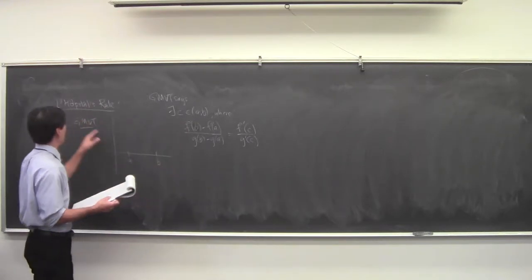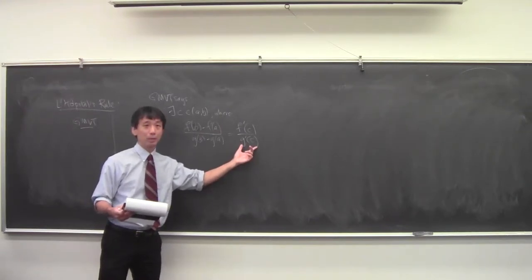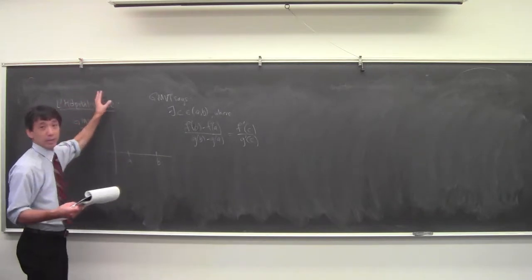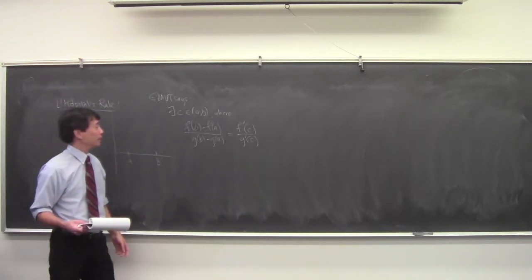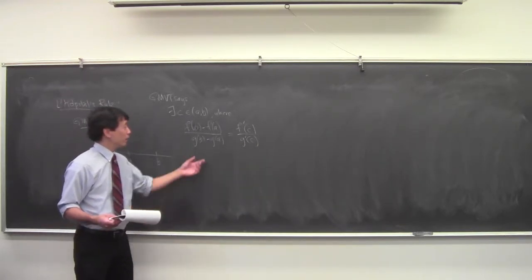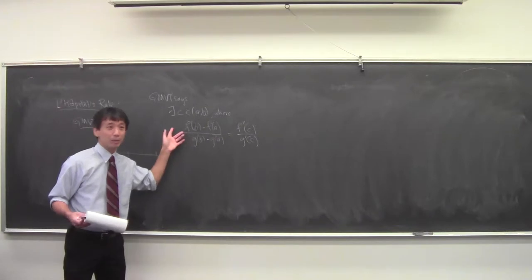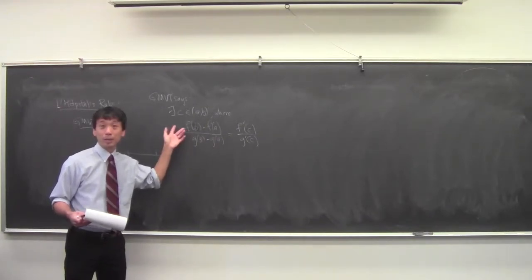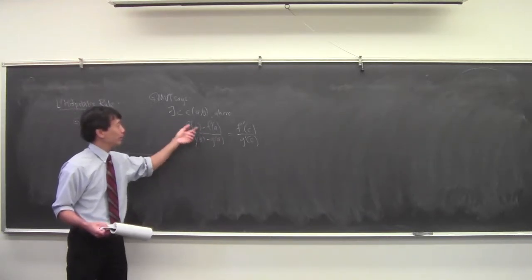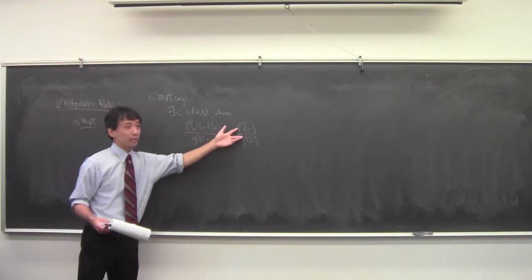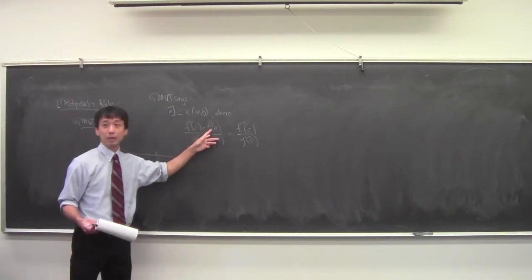We put some assumptions into L'Hôpital's rule so that we can divide by G'. We said that G' was never zero inside this interval, and that's why we can divide by G'. Looking at the generalized mean value theorem, you're starting to see L'Hôpital's rule already — you've got a ratio of the functions and a ratio of the derivatives.